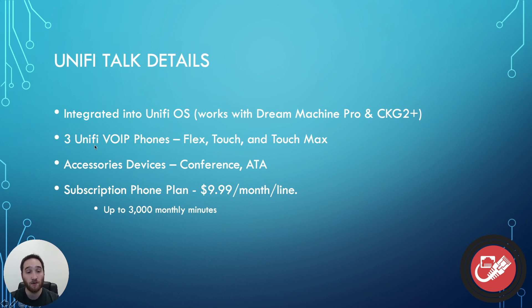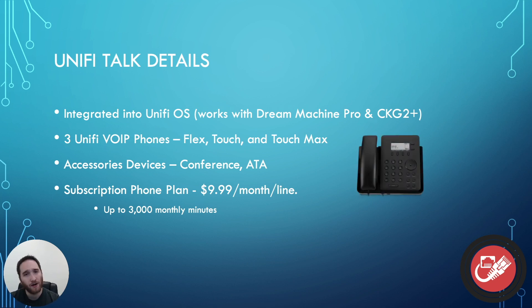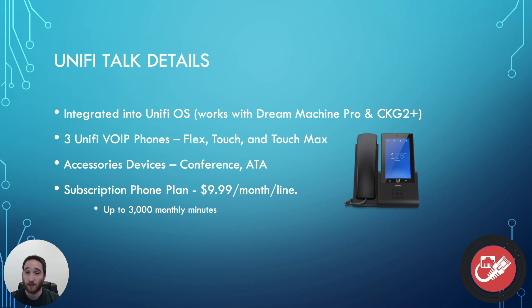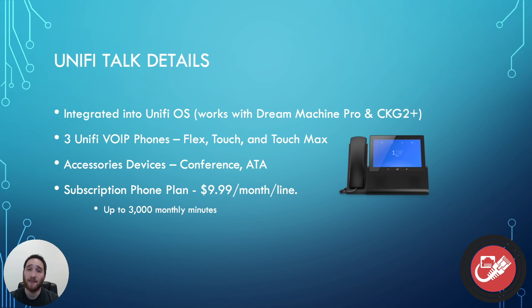They're also offering three Unify hardware phones — physical phones. You have the Flex, which is only $29, and it's your bare-bones basic voice-over-IP phone with call transferring and all the basics. That's your general staff phone. Then stepping up to around $79, you have the Touch, which is a more classy-looking device with a smartphone-style color display. It allows you to do everything the Flex can, plus video calling — which is coming soon — and it lets you view security camera feeds through Unify Protect, which is really neat.